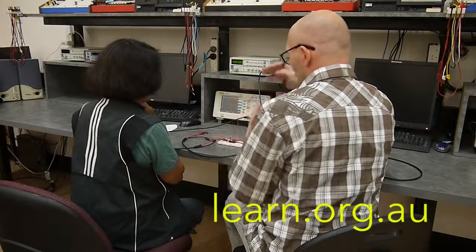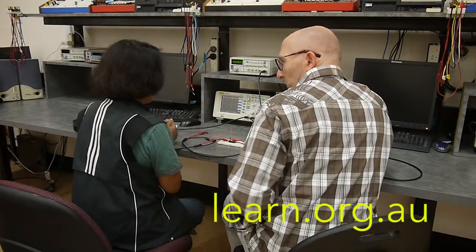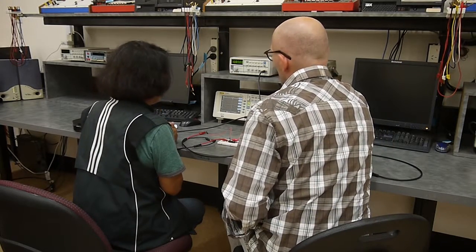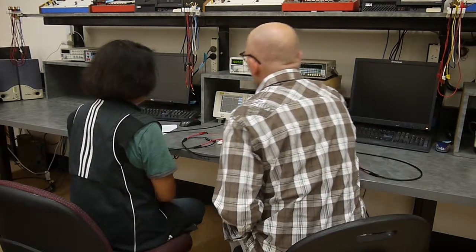Now the oscilloscope needs to recalibrate itself for the new input. So the quickest way to do that is just to push the auto function on the oscilloscope.